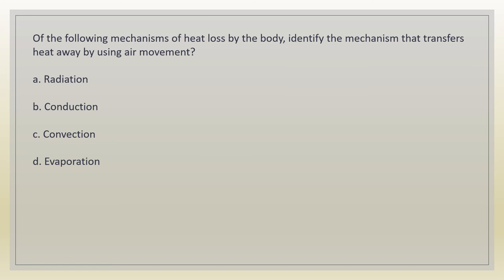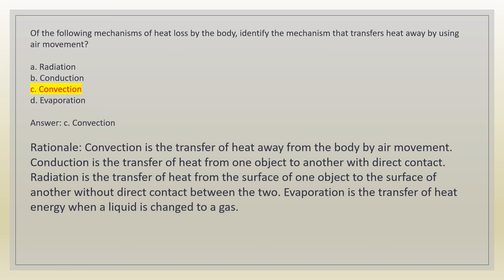Of the following mechanisms of heat loss by the body, identify the mechanism that transfers heat away by using air movement. A. Radiation. B. Conduction. C. Convection. D. Evaporation. Answer: C. Convection. Rationale: convection is the transfer of heat away from the body by air movement. Conduction is the transfer of heat from one object to another with direct contact. Radiation is the transfer of heat from the surface of one object to the surface of another without direct contact. Evaporation is the transfer of heat energy when a liquid is changed to a gas.